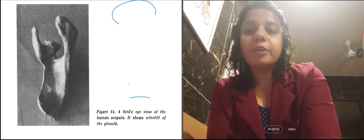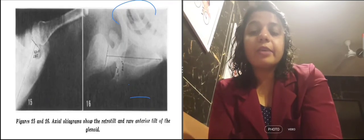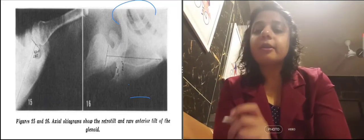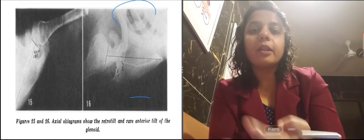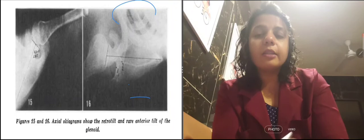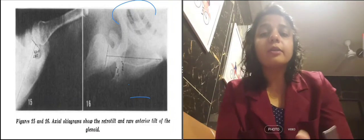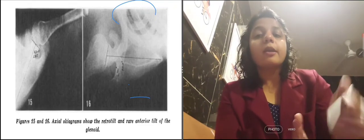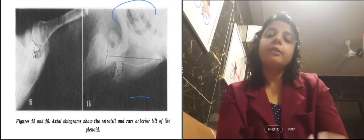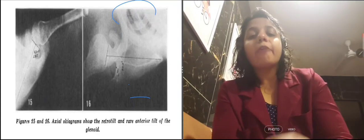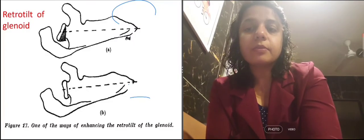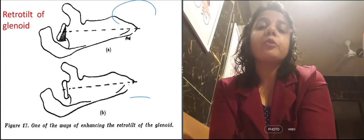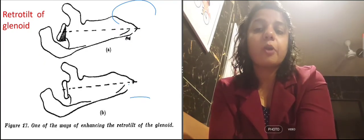Here we have a bird's eye view of the human scapula, and an axial skygram showing the retrotilt. Retrotilt is favorable for stability, but anterior tilt of the glenoid is not favorable — it will lead to dislocation. In some proportion of people, anterior tilt is present, and in cases of anterior tilt, people will have more anterior dislocation. He has also shown here how we can increase the retrotilt of the glenoid by doing osteotomy.